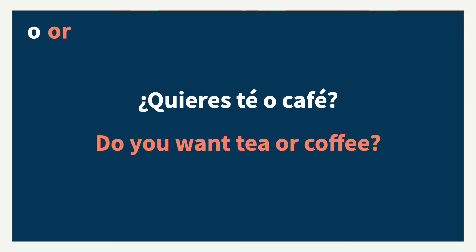O means 'or.' ¿Quieres té o café? Do you want tea or coffee? So very similar to what we use 'or' for in English. I also want to note that when using numbers, we usually put an accent mark on the O so we can tell it apart from zero. For example, uno o dos — one or two.